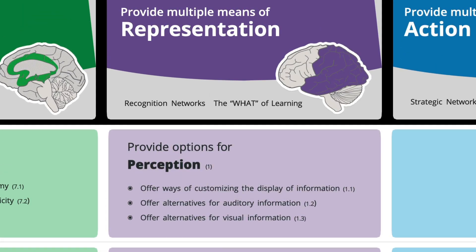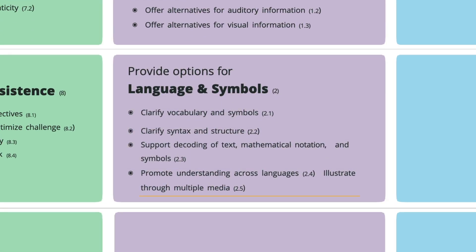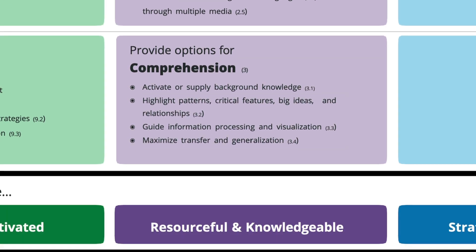Moving on to providing multiple means of representation — note how often these guidelines use the phrase 'provide options for,' because they're not telling you to do this or do that. Only you and your student know exactly what the right blend of answers is going to be. VoiceThread provides all kinds of options for both you and your students to customize the display of information, giving you a way to provide alternatives to audio or visual information simultaneously in the very same learning space. It also supports multiple languages, and the animated annotation tool allows you to bridge gaps of understanding by highlighting any visual element — whether graphical or symbolic — and when combined with voice and video, is a powerful way to guide students through information processing and visualization.